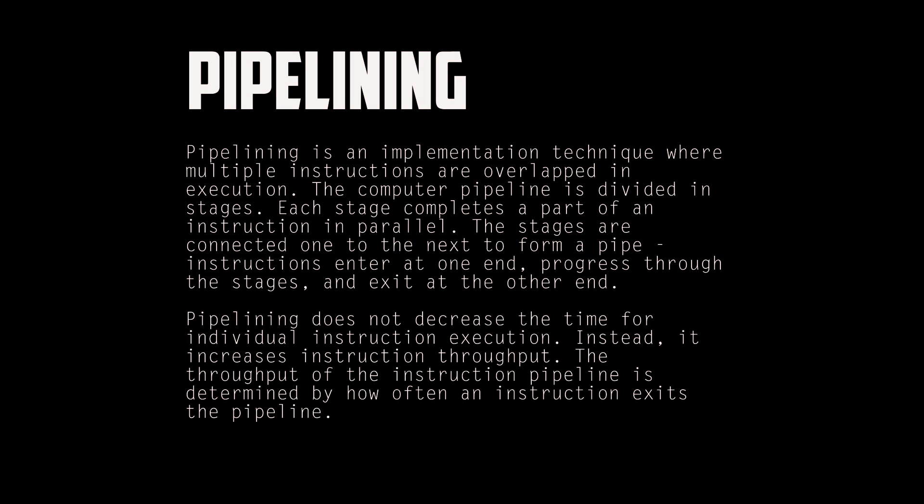Pipelining is an implementation technique where multiple instructions are overlapped in execution. The computer pipeline is divided into stages. Each stage completes a part of an instruction in parallel. The stages are connected one to the next to form a pipe. Pipelining does not decrease the time for individual instruction execution.